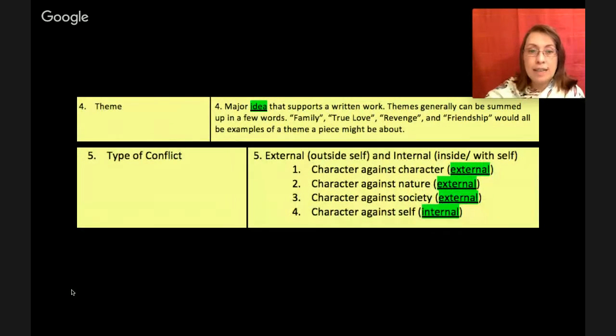All right, here comes number five and that is type of conflict. And there are two main categories of conflicts. There's external, which is outside of self, and there's internal, inside of self. We have four basic types of conflict. There's character against character, that's external. Character against nature, that's also an external conflict. Character against society, again external. And then character against self. Now this one's internal, that's within themselves. Now to help you understand this idea, I've got some visuals.